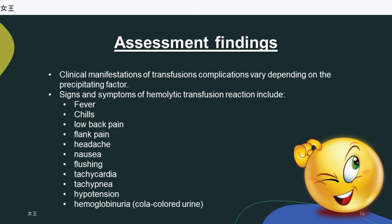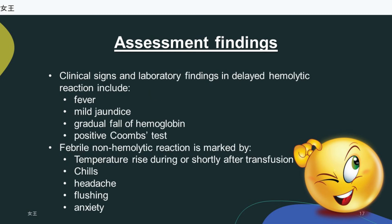Assessment findings: clinical manifestations of transfusion complications vary depending on the precipitating factor. Signs and symptoms of hemolytic transfusion reaction include fever, chills, low back pain, flank pain, headache, nausea, flushing, tachycardia, tachypnea, hypotension, and hemoglobinuria (cola-colored urine). Clinical signs and laboratory findings in delayed hemolytic reaction include fever, mild jaundice, gradual fall of hemoglobin, and positive Coombs test.